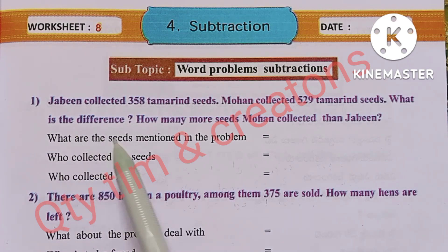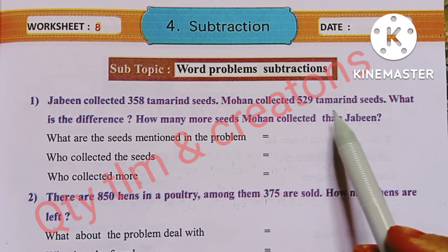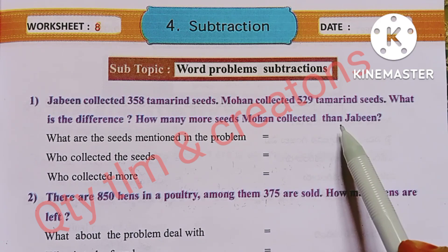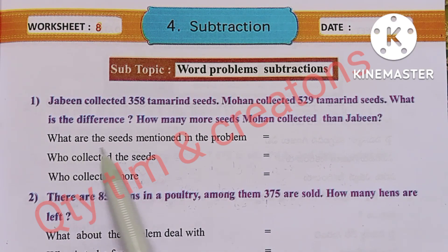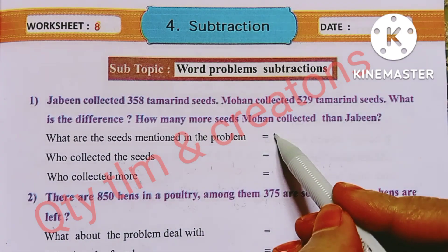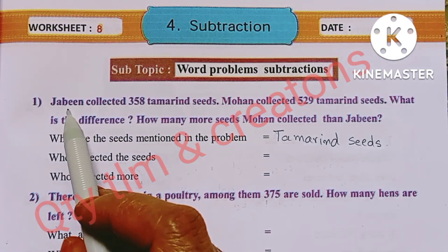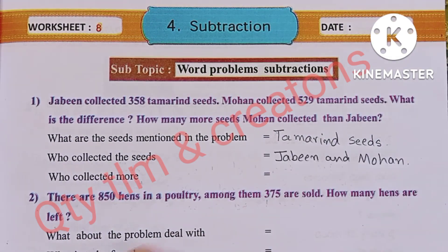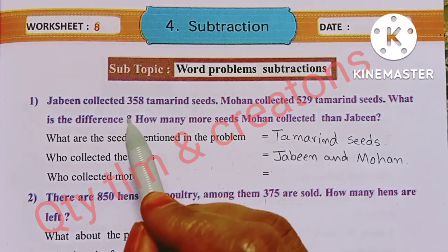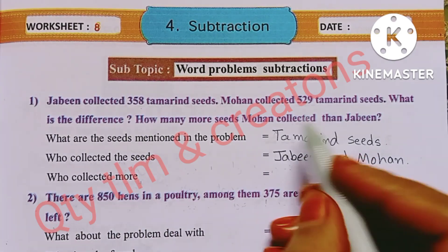First question: Jaybin collected 358 tamarind seeds and Mohan collected 529 tamarind seeds. What is the difference — how many more seeds did Mohan collect than Jaybin? Tamarind seeds are mentioned in the problem. Jaybin and Mohan collected the seeds. Here 529 seeds are greater than 358 seeds, so Mohan collected more seeds.